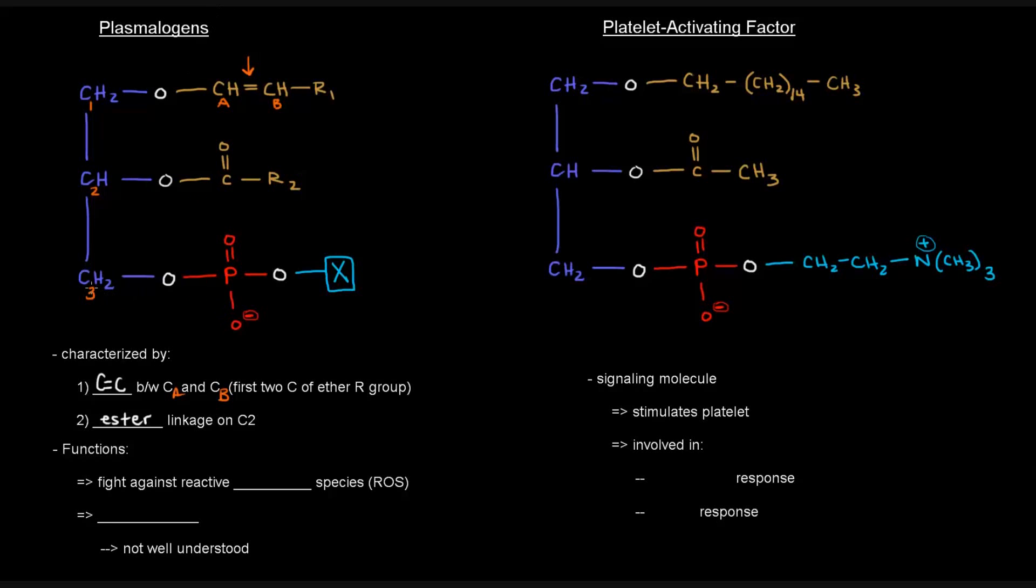Now, plasmalogens actually play a role in fighting against reactive oxygen species, which can go through and oxidize and damage biological molecules. So plasmalogens play a role in fighting off against those. And they're also important in signaling as signaling molecules. But that sort of idea is not really well understood. So I really don't know too much about that.